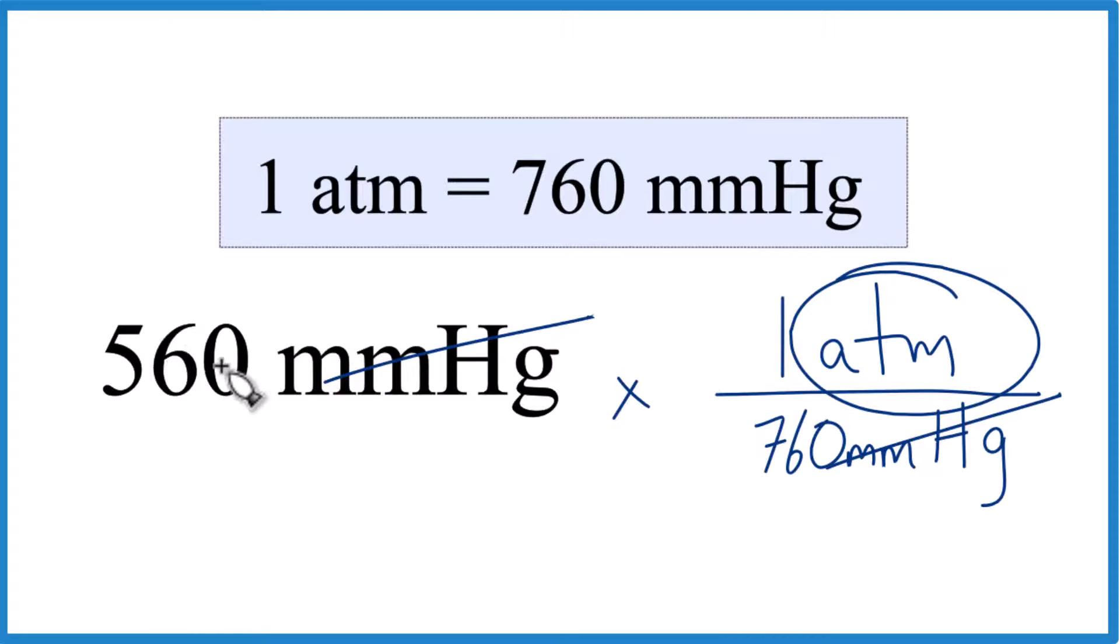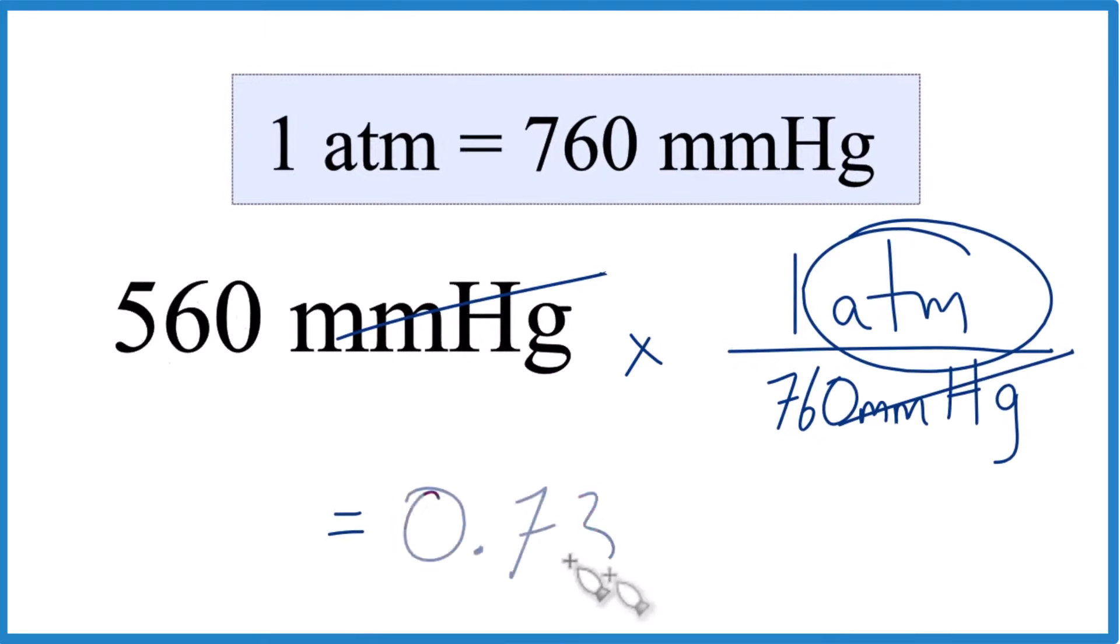So 560 divided by 760, that equals 0.7368. So let's round that to 0.737. And the units, that's going to be atmospheres. That's all that's left here. And that's how we know we did this correctly.